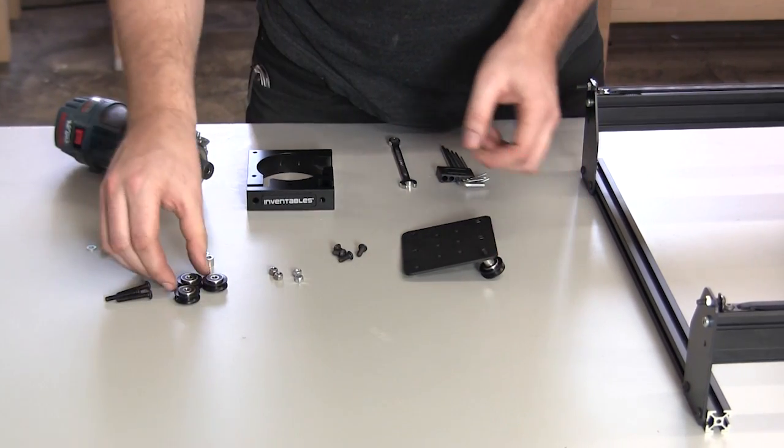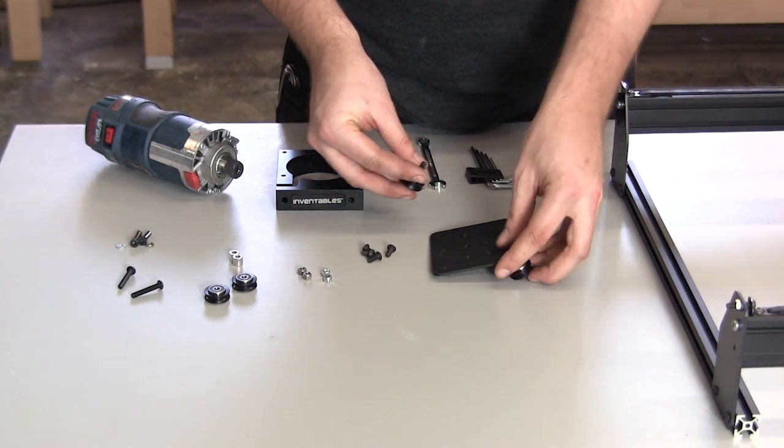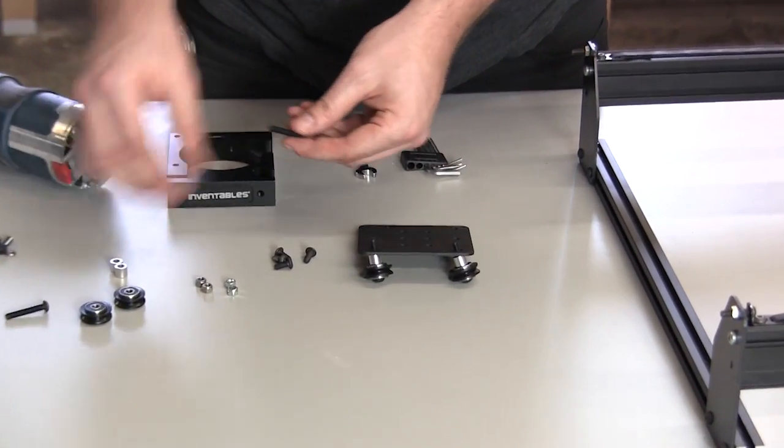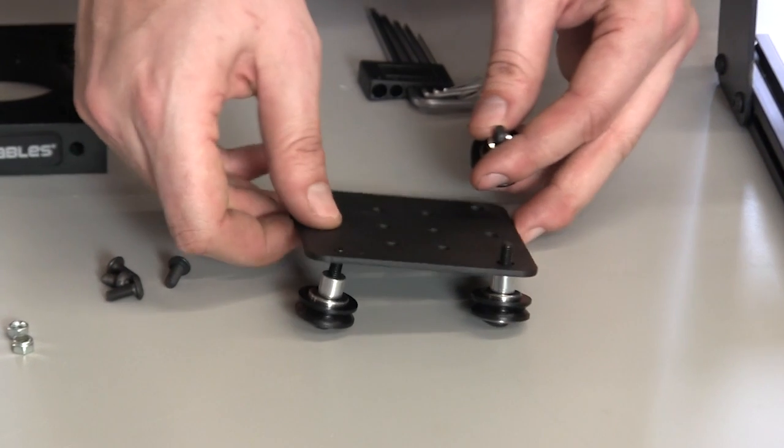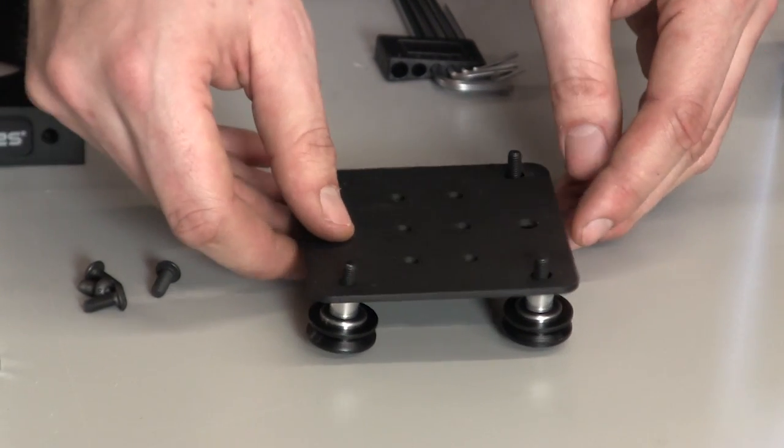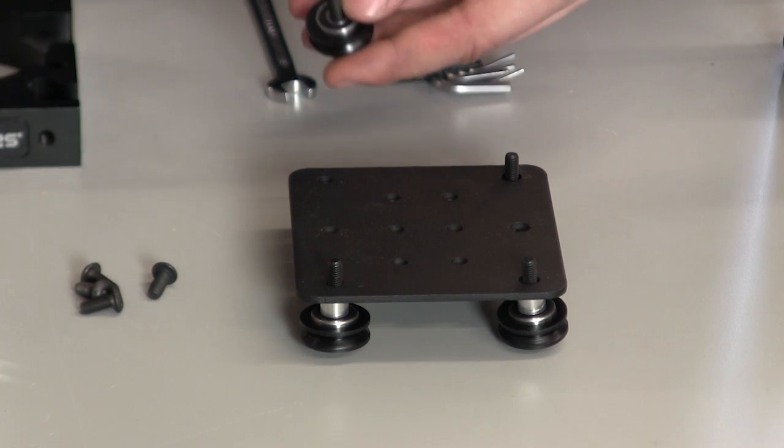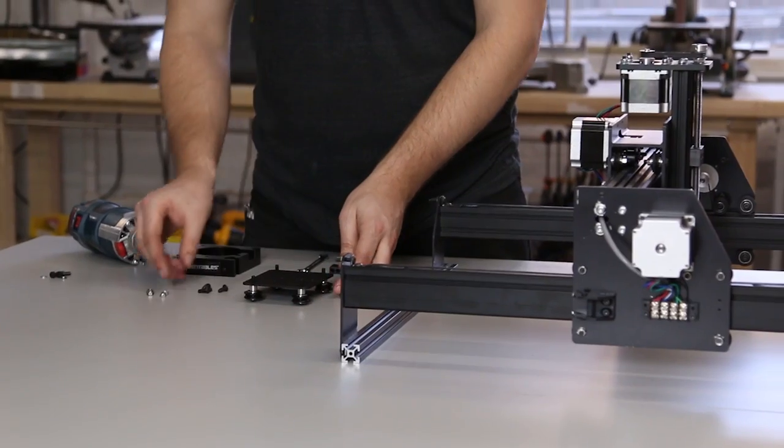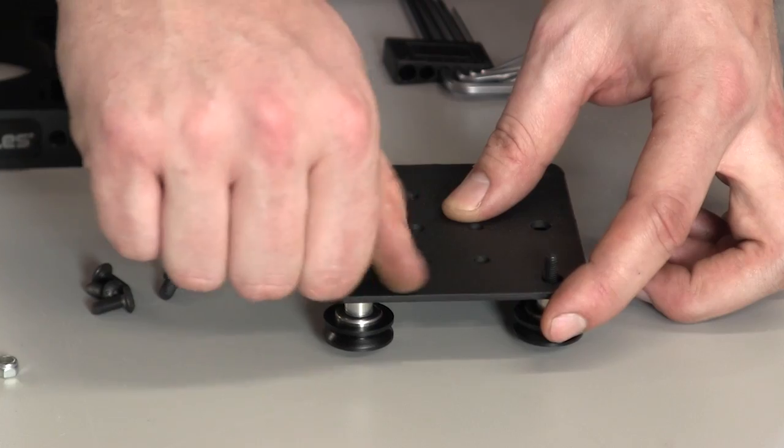Then stick the screws through the holes on the plate. You'll notice again that there are two size holes for mounting V-wheels, smaller ones and larger ones. These correspond to nylock hex nuts and eccentric nuts. Be sure you use nylock hex nuts on the smaller holes and eccentric nuts on the larger holes.